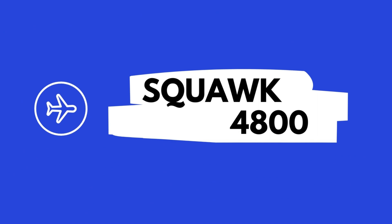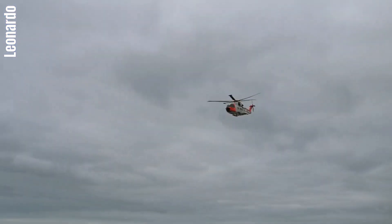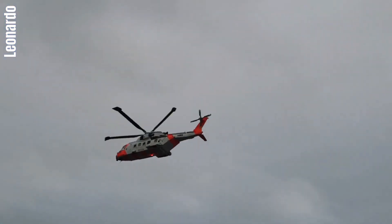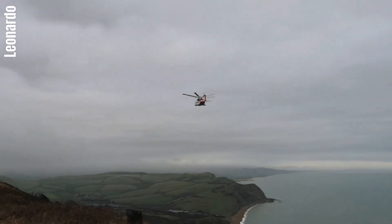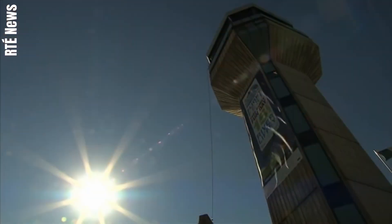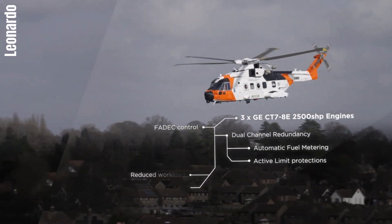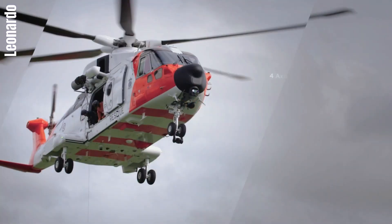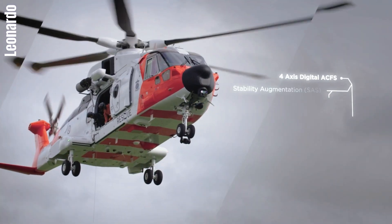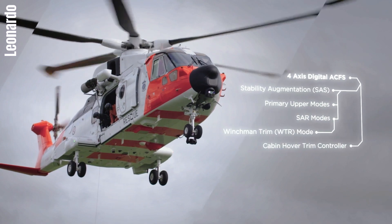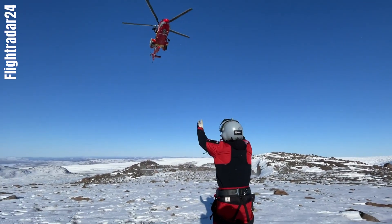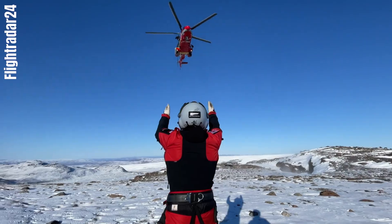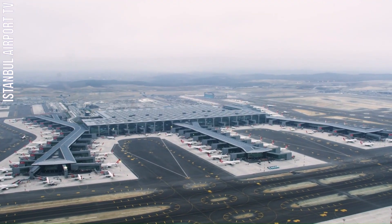Squawk 4800 is used by aircraft conducting search and rescue operations. It is a special squawk code that indicates to air traffic controllers that the aircraft is involved in a search and rescue mission. Squawk 4800 helps air traffic controllers quickly identify and track search and rescue aircraft, which is important because these aircraft may be operating in areas with a lot of other traffic, such as near airports or busy airspace.